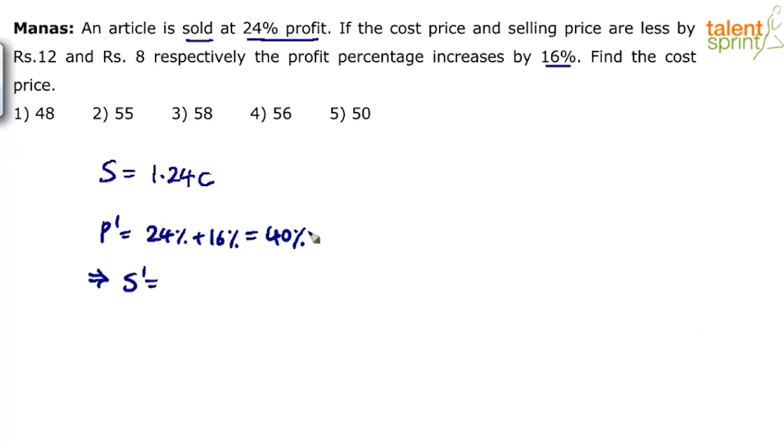So S' will be equal to what? If the profit is 40%, selling price will be 140%. So which is 1.4 times the cost price C', but we know that selling price S' and the cost price C' have been reduced by 8 and 12 respectively.